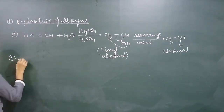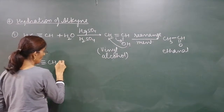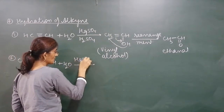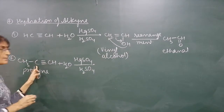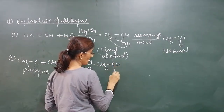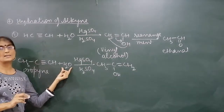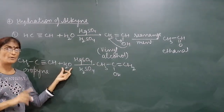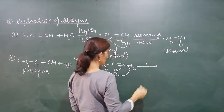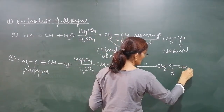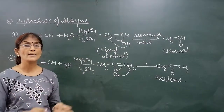Suppose we have propyne - on hydration with HgSO4 and H2SO4, water is added according to Markovnikov's rule: OH adds to the carbon having fewer hydrogens. So we get CH3-C(OH)=CH2. Then rearrangement takes place - hydrogen moves and double bond shifts - to give CH3-CO-CH3 (acetone). So hydration of alkyne also produces aldehydes and ketones.